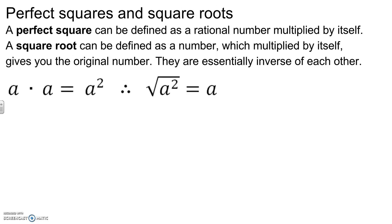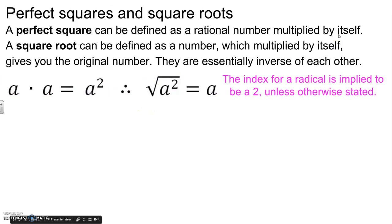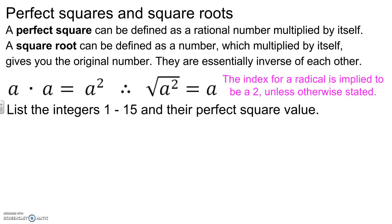Here's an example. We have a times a equals to a squared. Therefore, the square root of a squared would be a. So this is just telling us what value times itself. a times itself would be a squared. And as I said before, this part of the check mark here has no number there. That means it implies that it's a two.